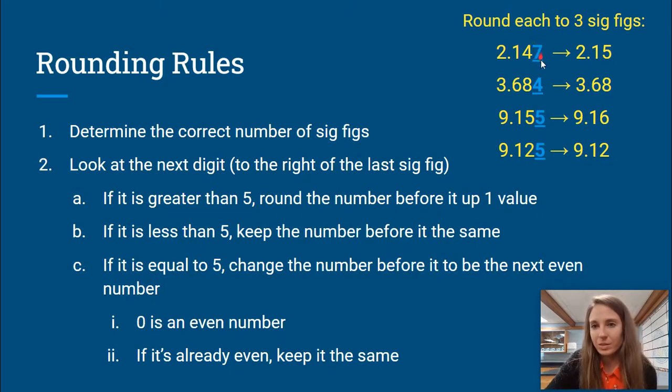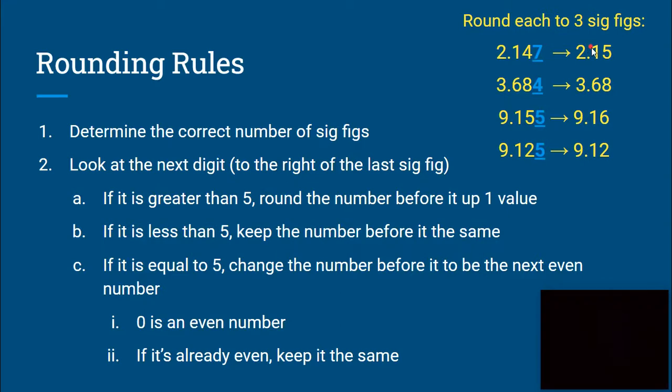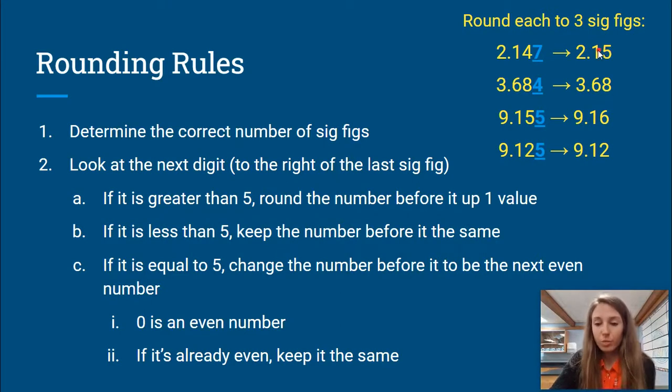Now, based on what this number is, we are going to do one of three things. The first rule for rounding is that if this digit is greater than five - and I mean greater than five, not greater or equal to - so six, seven, eight, or nine, you are going to round the digit before it up one. So we are going to round the four up to a five, to make this number 2.15.